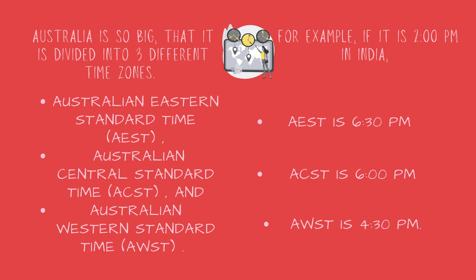For example, if it is 2 pm in India, Australian Eastern Standard Time is 6:30 pm, Australian Central Standard Time is 6 pm, and Australian Western Standard Time is 4:30 pm.